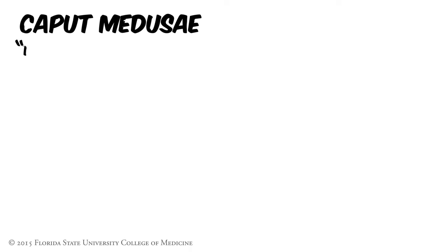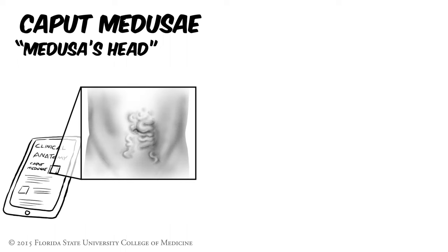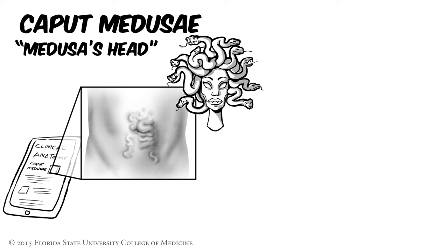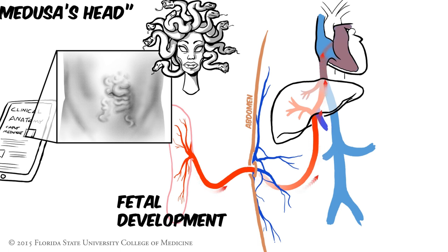Now let's look at two other portosystemic anastomoses: caput medusa and anorectal varices. Caput medusa — or in English, Medusa's head — refers to swollen subcutaneous veins on the surface of the abdomen that radiate out from the umbilicus. The appearance of these swollen, tortuous veins reminded early clinicians of images of the mythological Greek goddess Medusa, who is depicted as having snakes in place of hair. Caput medusa results from portal venous hypertension in the umbilical vein that spreads into subcutaneous systemic veins on the abdomen. The umbilical vein is important during fetal development, as it delivers oxygenated blood from the placenta to the fetus, and also receives blood from small systemic veins on the surface of the abdomen. The umbilical vein delivers some of its blood directly to the liver.